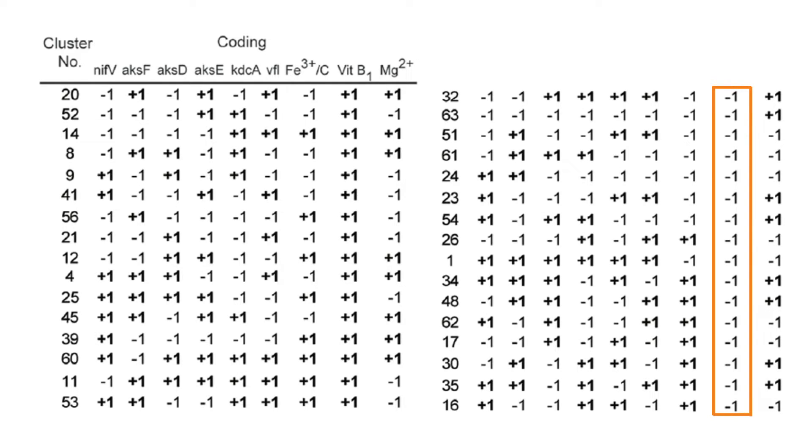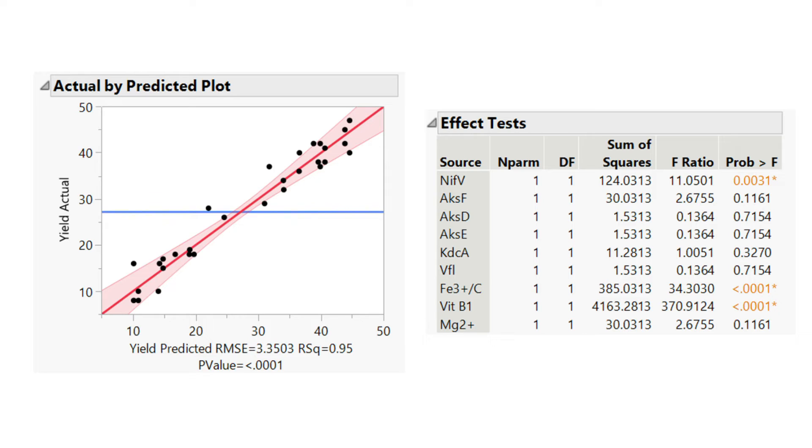Once the results have been obtained, a regression analysis was performed on the data to determine the factors that most influence the titer. A quadratic polynomial model was used to estimate the response curve. From this analysis, vitamin B1 was shown to have the strongest positive effect on titer.